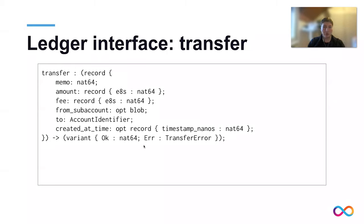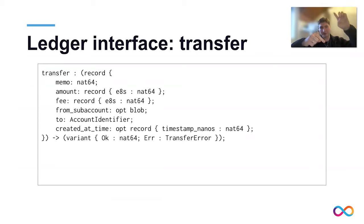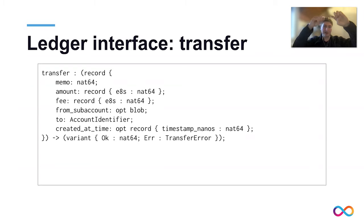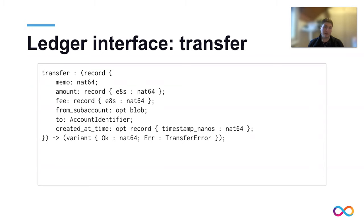The output you get when you execute the transfer is either OK, and then you get the block index — the absolute index in the blockchain, basically how many blocks the ledger has minus one — or you get a transfer error.